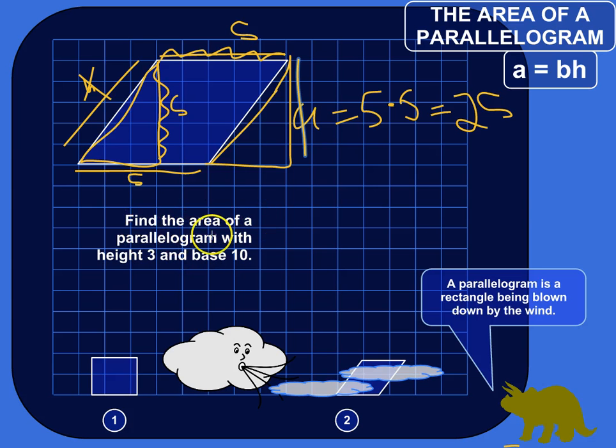So in a word problem, you might see something like, find the area of a parallelogram with the height of 3 and the base of 10. So area is the base times the height. So the base is 10, the height is 3. So the area of a parallelogram in this problem would be 30.